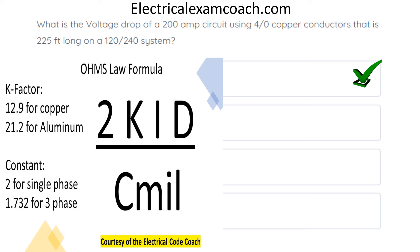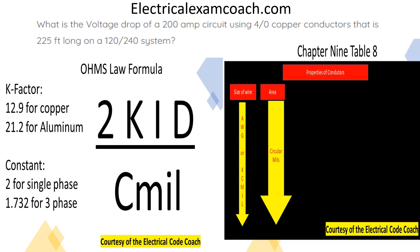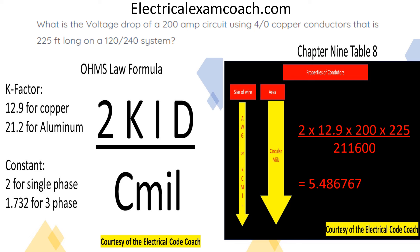For this one, we use our Ohm's Law formula: 2KID divided by Cmils. We have 2 as our constant, K-factor is 12.9 because it's copper, then our current and distance divided by Cmils. We head to Chapter 9, Table 8, start on the left-hand side to find our 4-aught conductor, then cross over to get our Cmils. Plugging in: 2 multiplied by 12.9 multiplied by 200 multiplied by 225, divided by the circular mils of a 4-aught copper conductor equals 5.487. We round up to 5.5 volts.